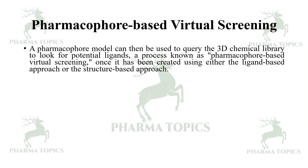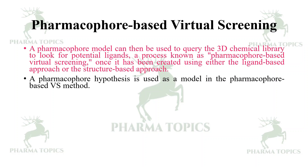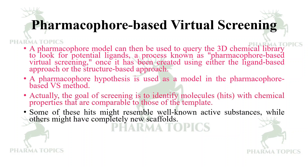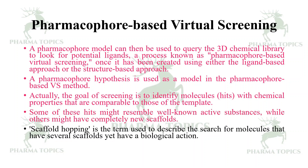Pharmacophore-based virtual screening involves using a pharmacophore model to query a 3D chemical library to look for potential ligands. Once created using either a ligand-based or structure-based approach, a pharmacophore hypothesis is used as a model in this screening method. The goal is to identify hits with chemical properties comparable to those of the template. Some hits might resemble known active substances, while others might have completely new scaffolds — this search for molecules with new scaffolds yet similar biological action is called scaffold hopping.